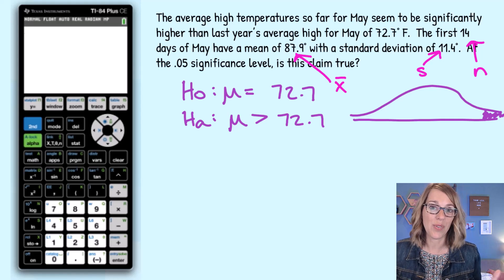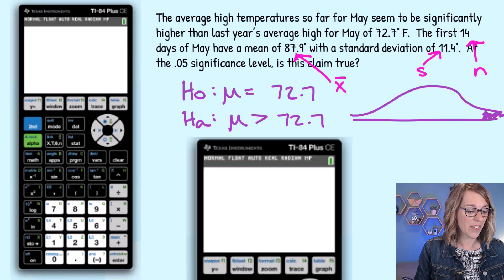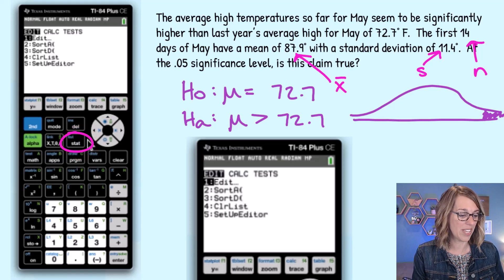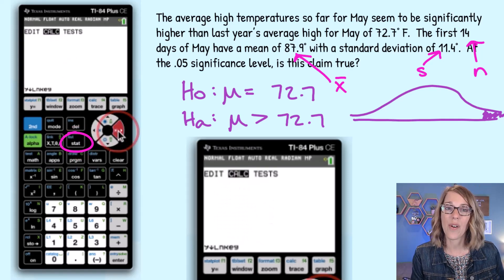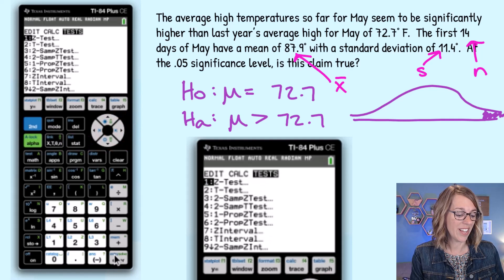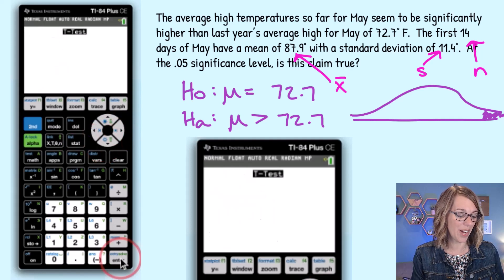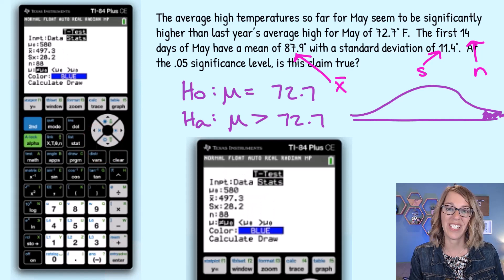Let's put this information into our calculator. The very first thing that we want to do is to go to our stat menu. So we hit stat and then arrow over to tests. We're looking for that t-test and it's the second option. So I'll arrow down and then choose t-test.